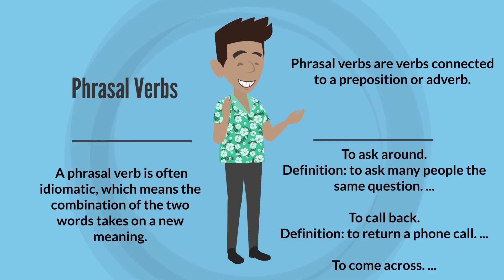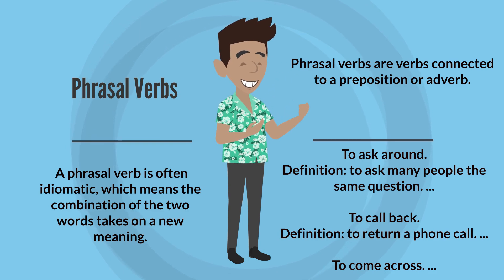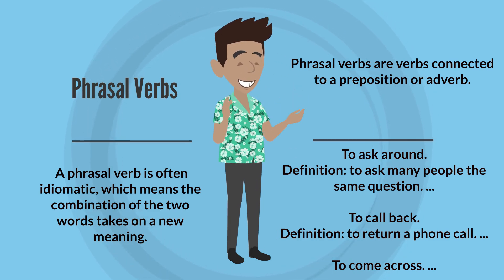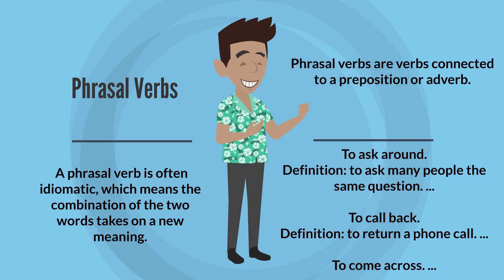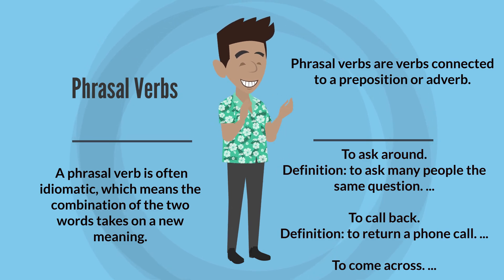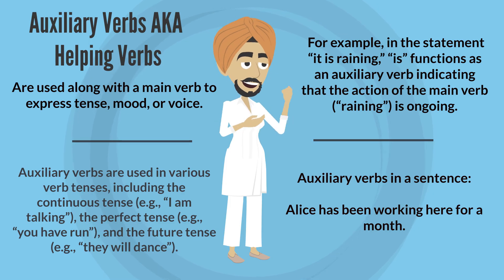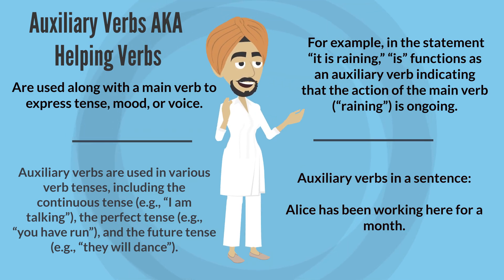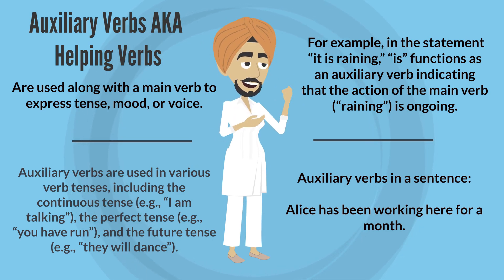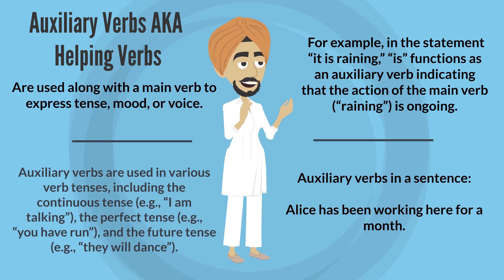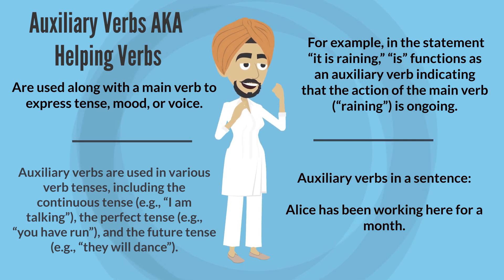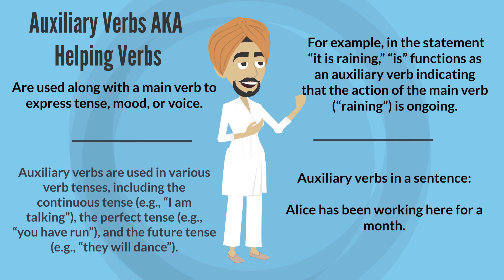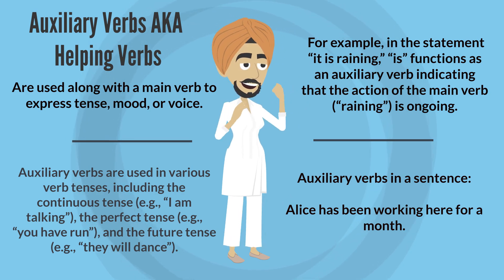Phrasal verbs are verbs connected to a preposition or adverb and are often idiomatic — the combination of the two words takes on a new meaning. Examples: 'to ask around' (to ask many people the same question); 'to call back' (to return a phone call); 'to come across.' Auxiliary verbs — also called helping verbs — are used along with a main verb to express tense, mood, or voice. For example, in 'It is raining,' 'is' functions as an auxiliary verb. Auxiliary verbs appear in the continuous tense ('I am talking'), the perfect tense ('You have run'), and the future tense ('They will dance').